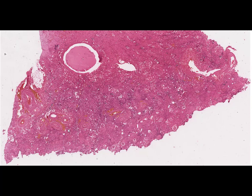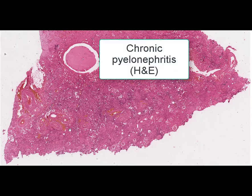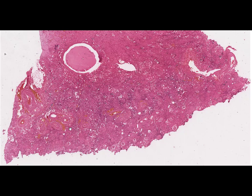On this slide again we can see a kidney, stained by hematoxylin and eosin. The name of this slide is chronic pyelonephritis. In contrast to glomerulonephritis, pyelonephritis is an inflammation of the pyelocaliceal apparatus and tubular-interstitial component of kidney parenchyma. Generally it is caused by infections.